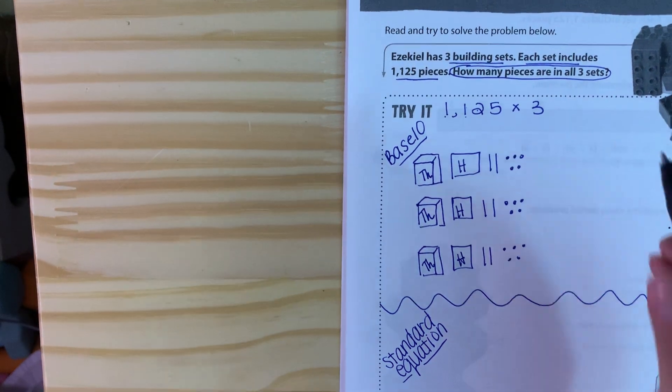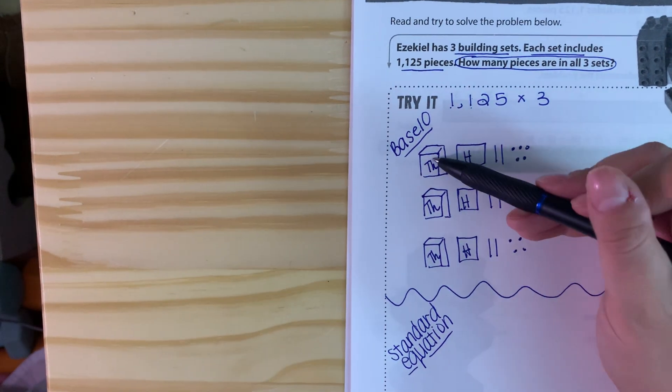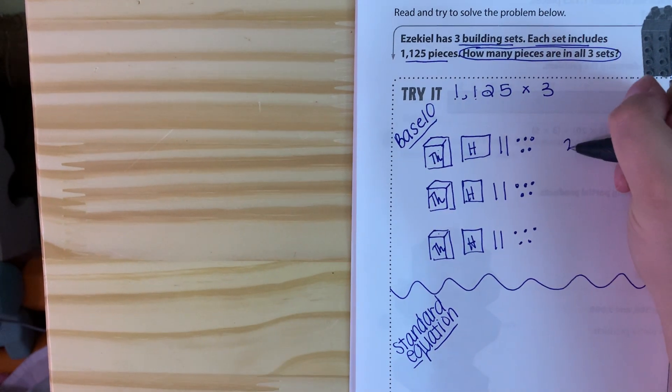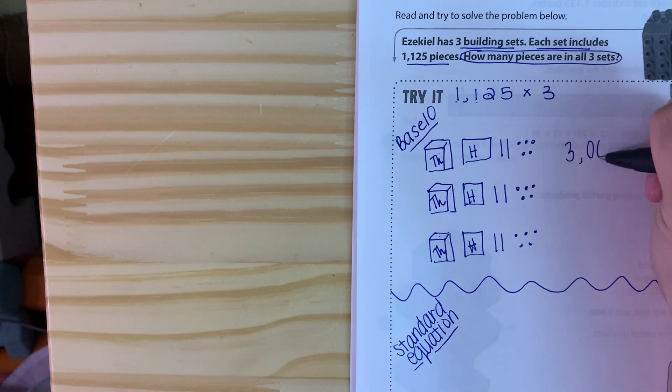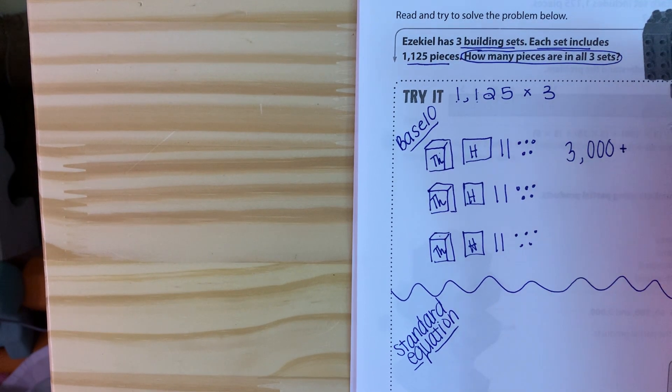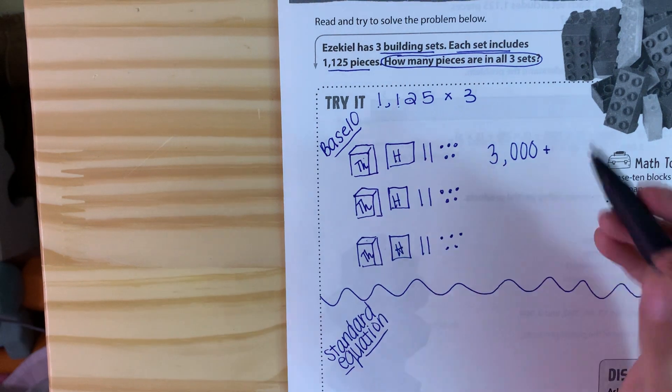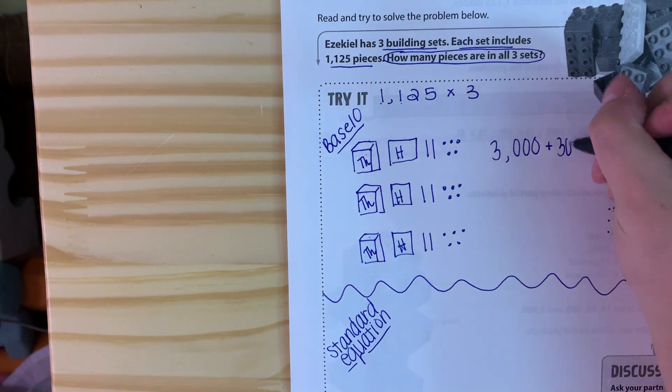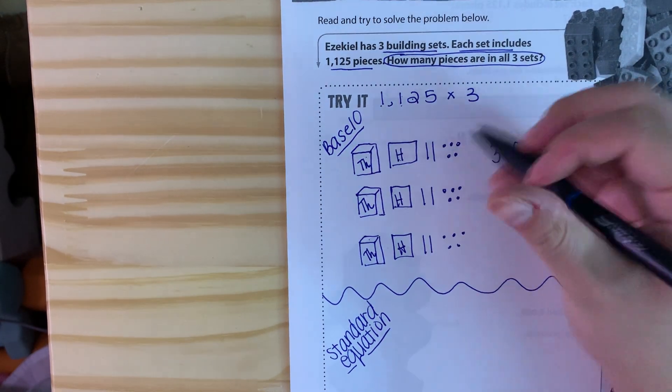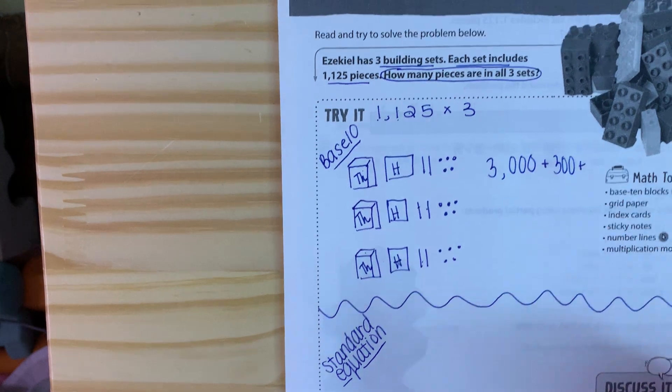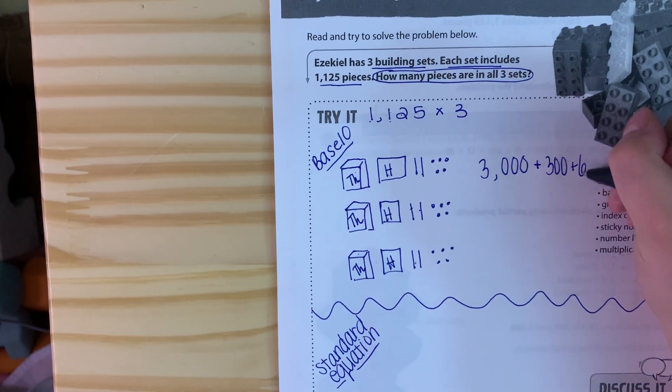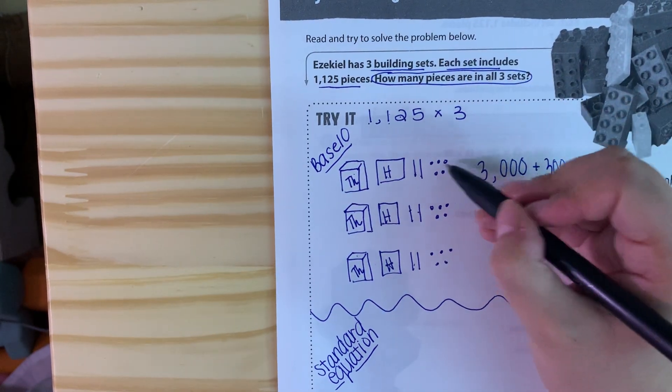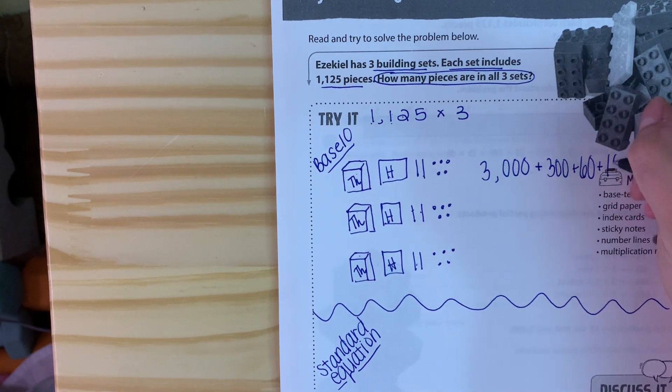And then we have two tens and five ones. So then you can go and count what we have. So we have three thousands plus one, two, three hundreds. Oh no, I'm going to run out of room. Plus 10, 20, 30, 40, 50, 60 tens plus 5, 10, 15 ones.